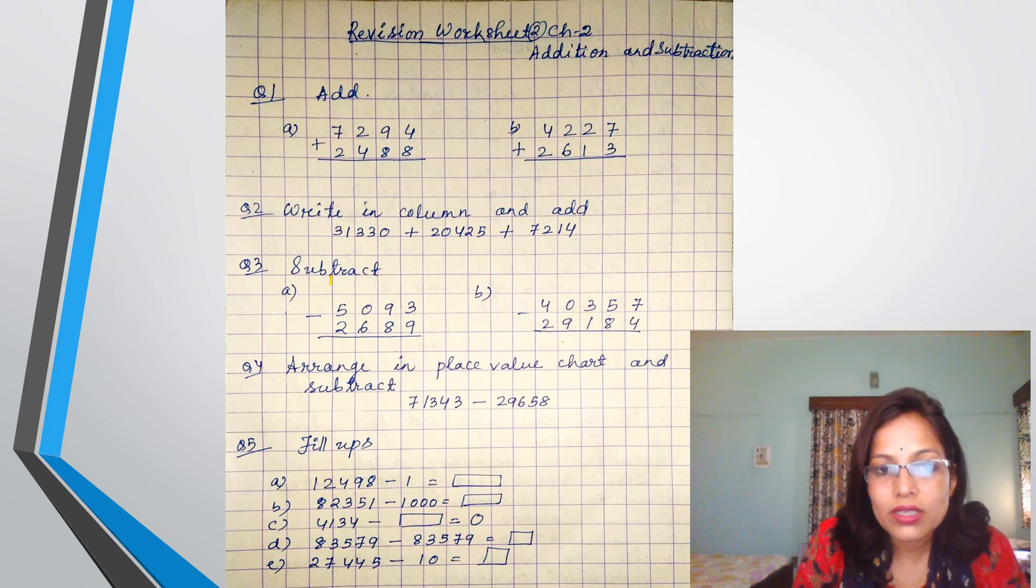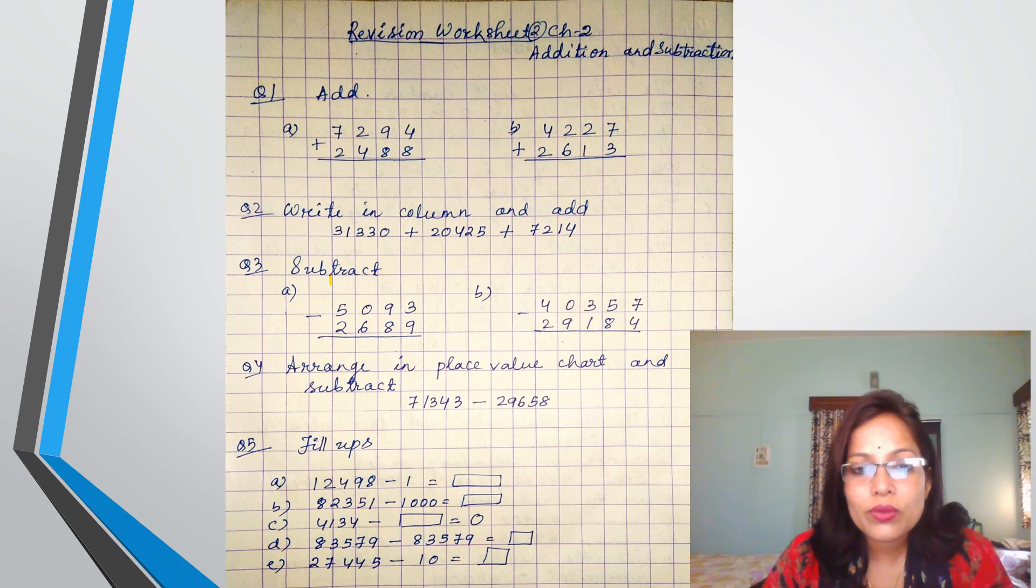First write this number, 31,330. Then below that you write 20,425. Write here 1, 10, 100, 1000, 10,000, then arrange the numbers and add. Then subtract: 5093 minus 2,689. Same way for the B question also.